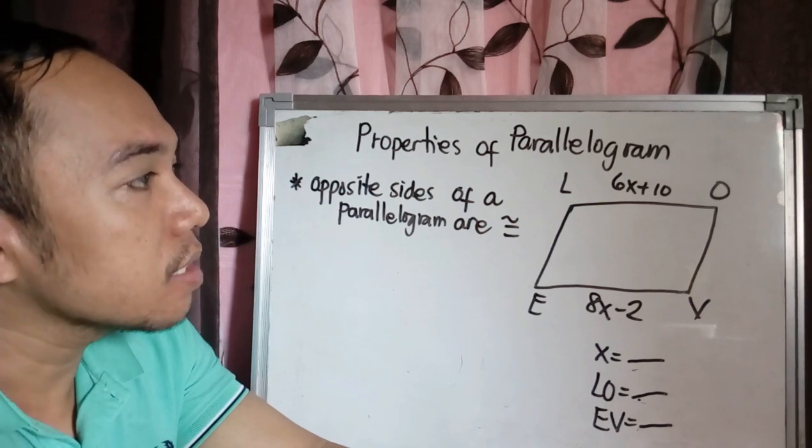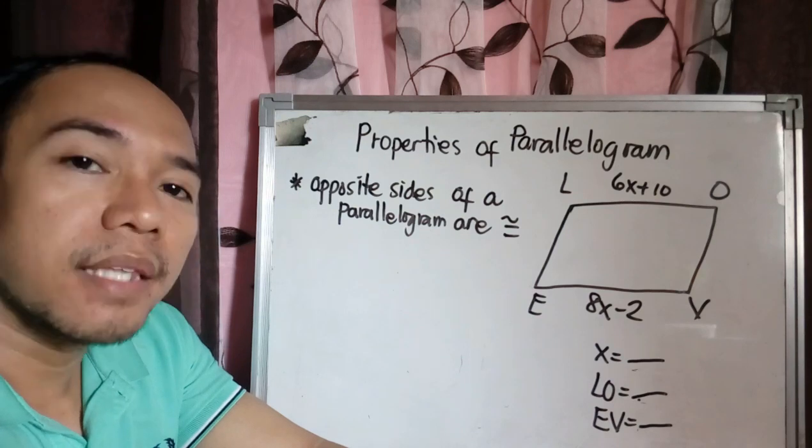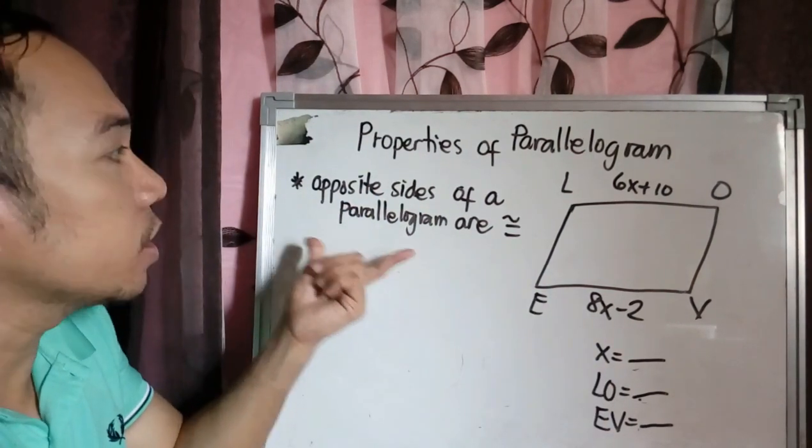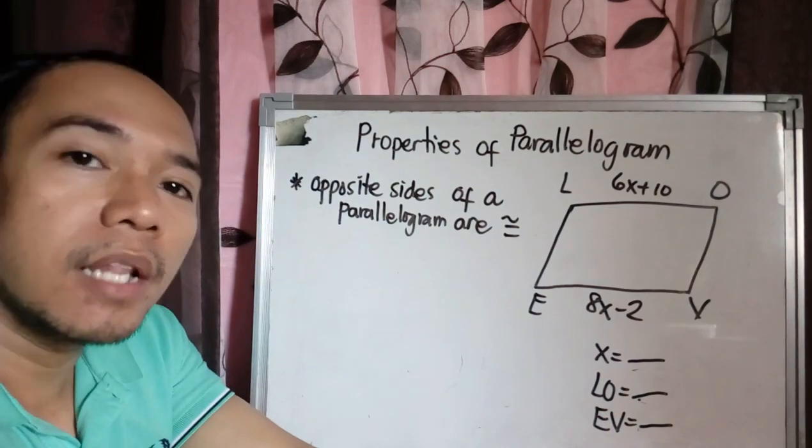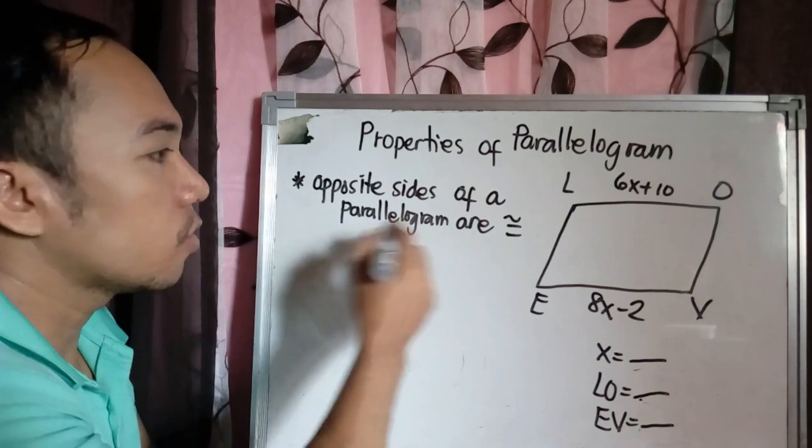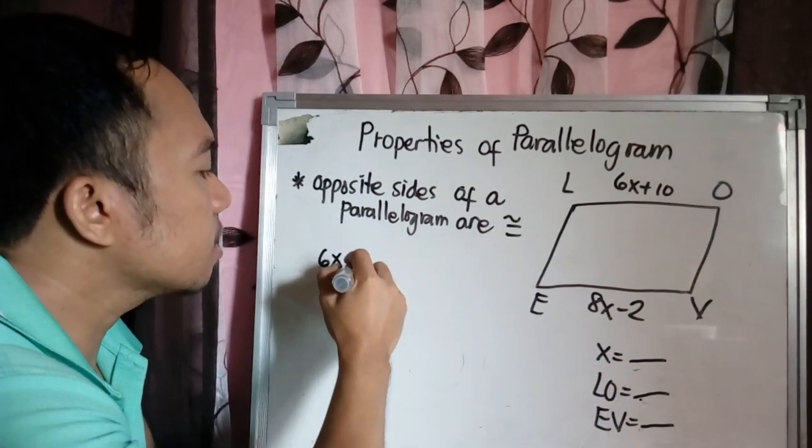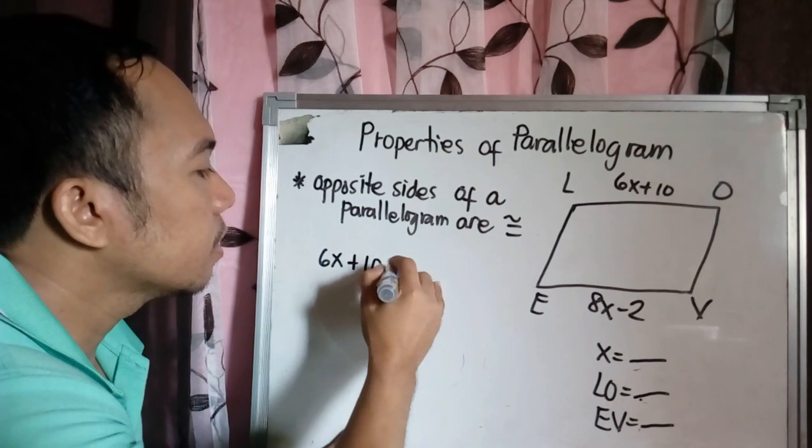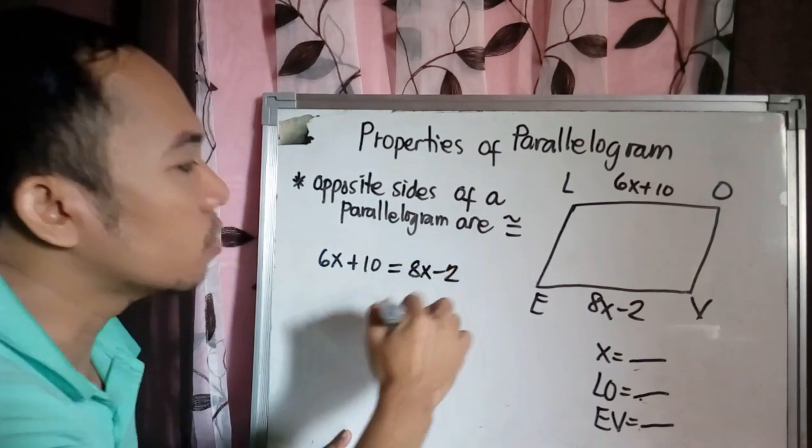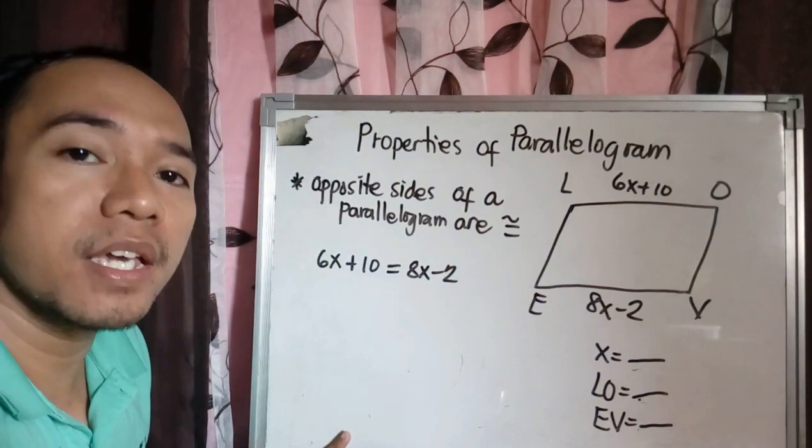So we have here 6X plus 10 is equal to 8X minus 2. Because of your first property, opposite sides of a parallelogram are congruent or equal. So to solve for X we need to equate 6X plus 10 equals 8X minus 2 using this property. So how do we solve this?